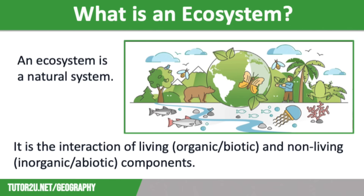Ecosystems can be on a range of scales. They can be local or small scales, which we sometimes refer to as a habitat — for example, a freshwater pond or a deciduous woodland. They can also be regional, such as large areas of forest or moorland.